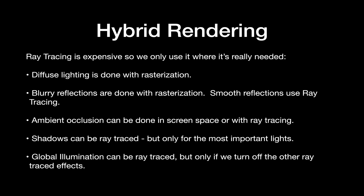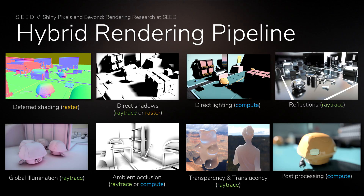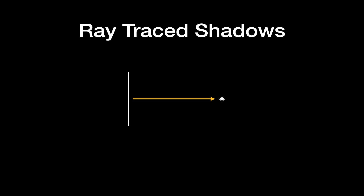Global illumination can be computed with ray tracing, but if it is, you usually don't have any budget left for anything else to be ray traced, so you have to choose which effects to ray trace and which to use raster rendering for. As ray tracing hardware becomes more powerful, the balance will tip more toward the ray tracing side.